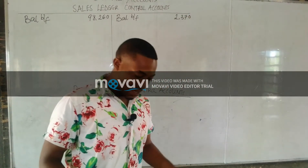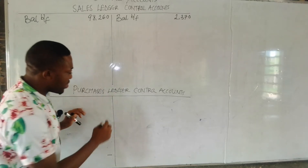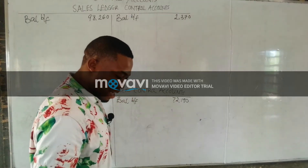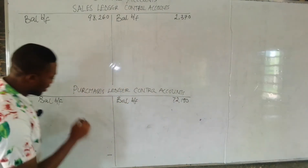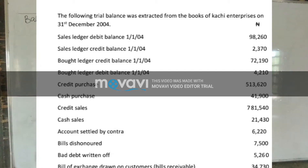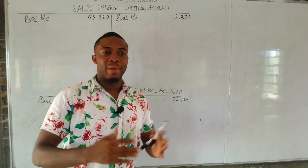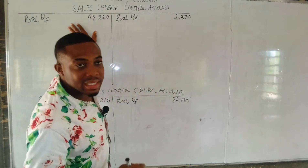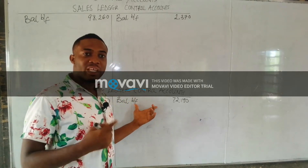Next we have the purchase ledger credit balance, posted to the purchase ledger as balance brought forward of $72,190. And the purchase ledger debit balance is $4,210. Note: when a question is silent and just says 'sales ledger balance,' post it to the debit side, because all debtors have a debit balance. For the purchase ledger, post to the credit side, because all creditors have a credit balance.